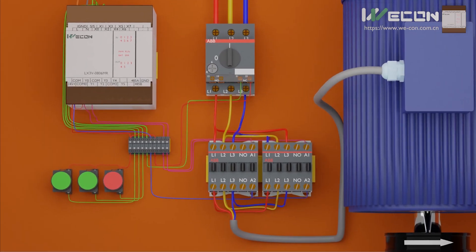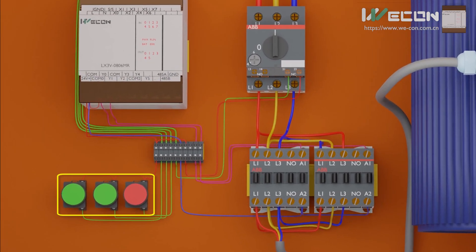We have three pushbuttons — two green pushbuttons and one red pushbutton with normally open contacts. The green pushbuttons will provide a signal to run the motor in forward or reverse directions, and both are connected at X0 and X1 inputs of the PLC respectively. The red pushbutton provides the signal to stop the motor and is connected at the X2 input of the PLC.